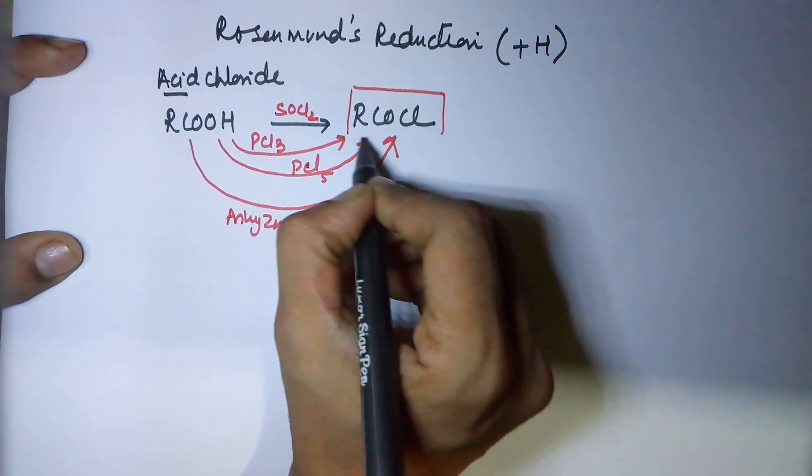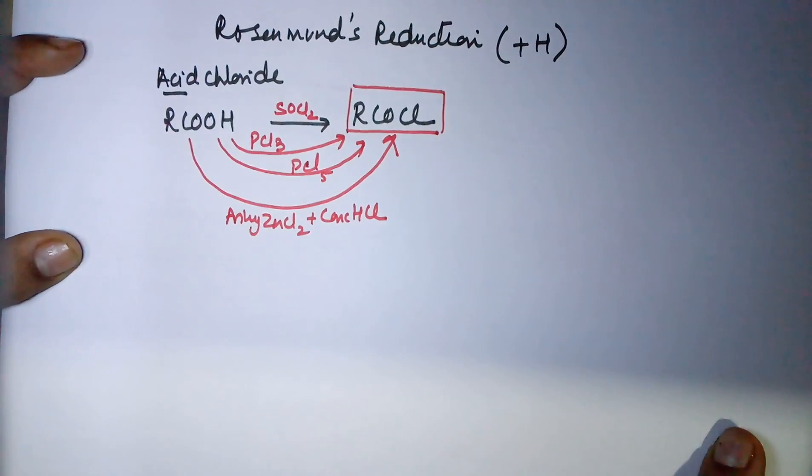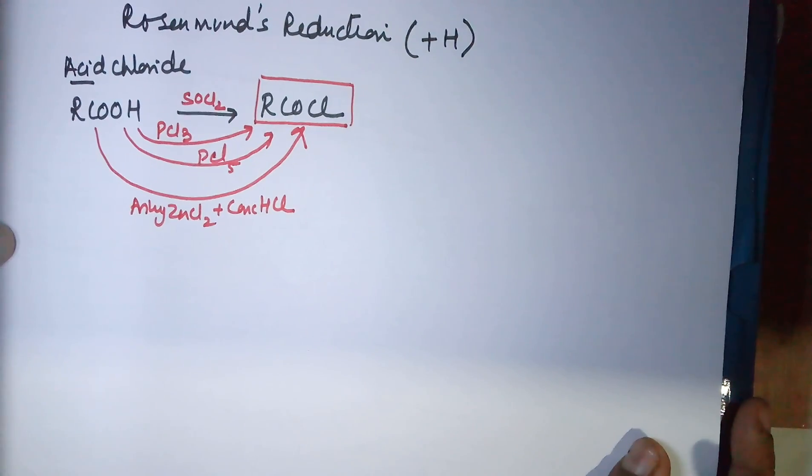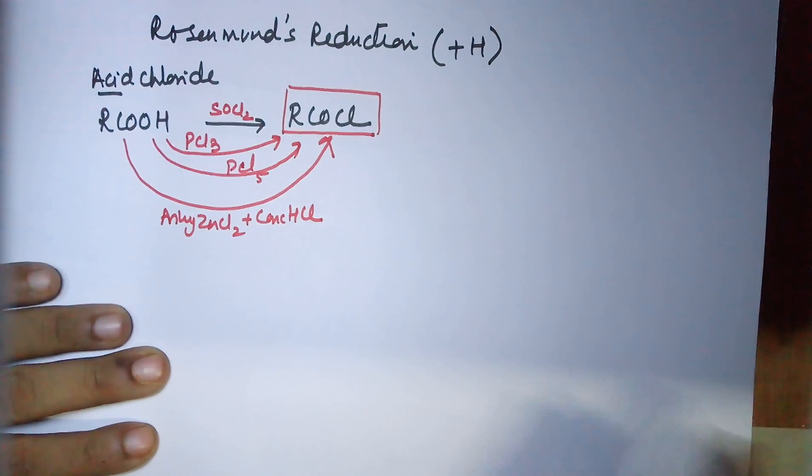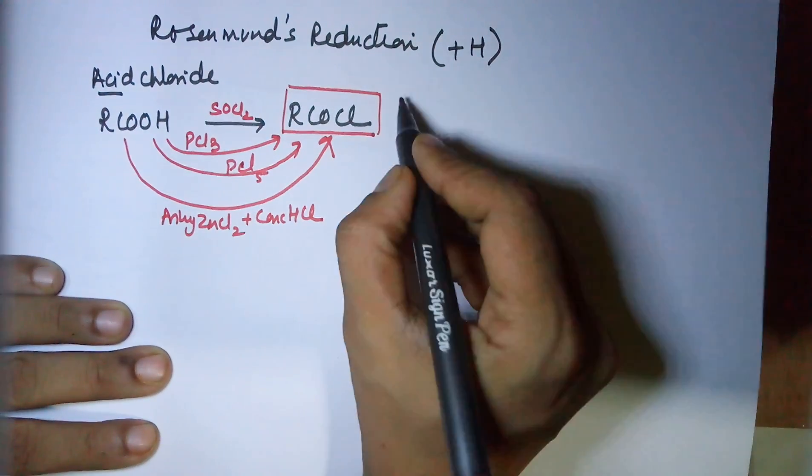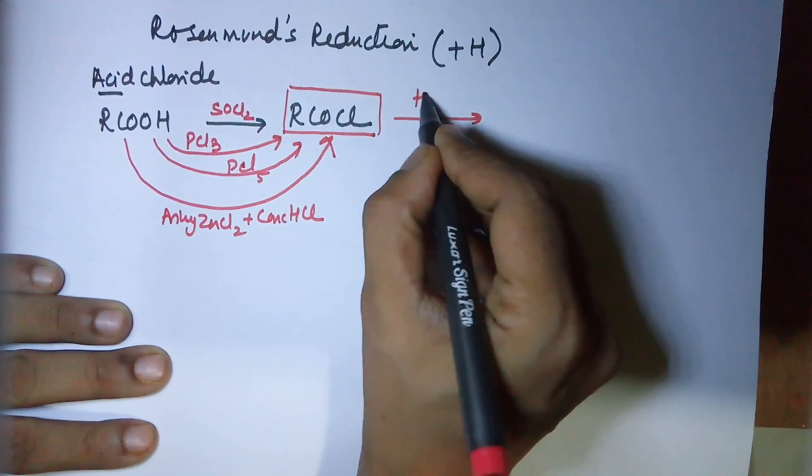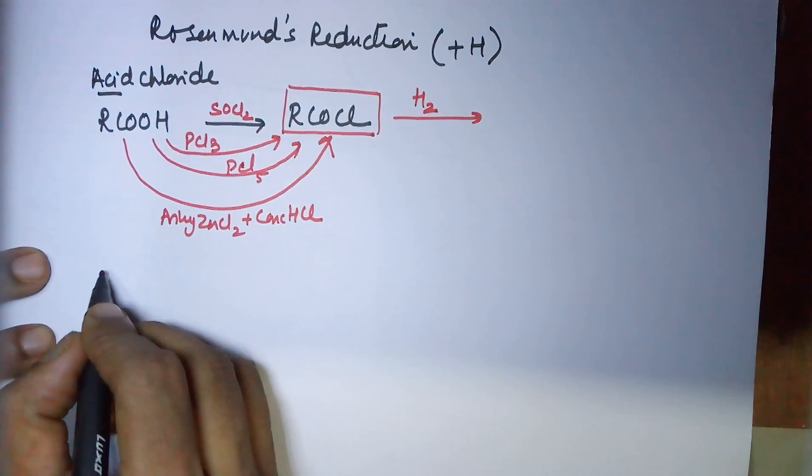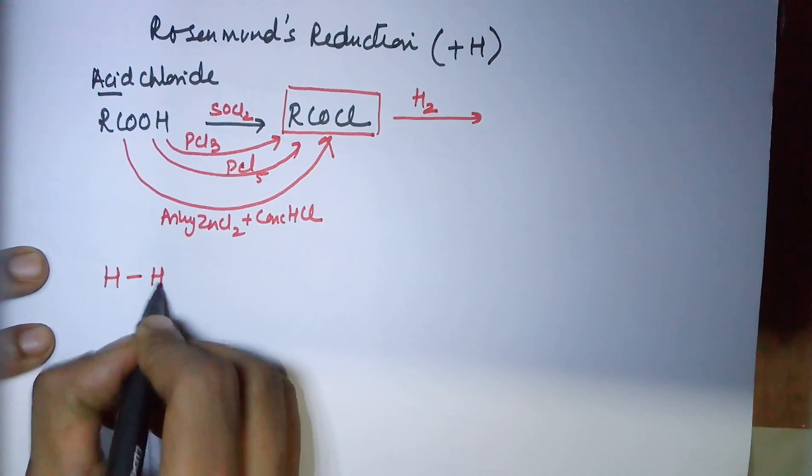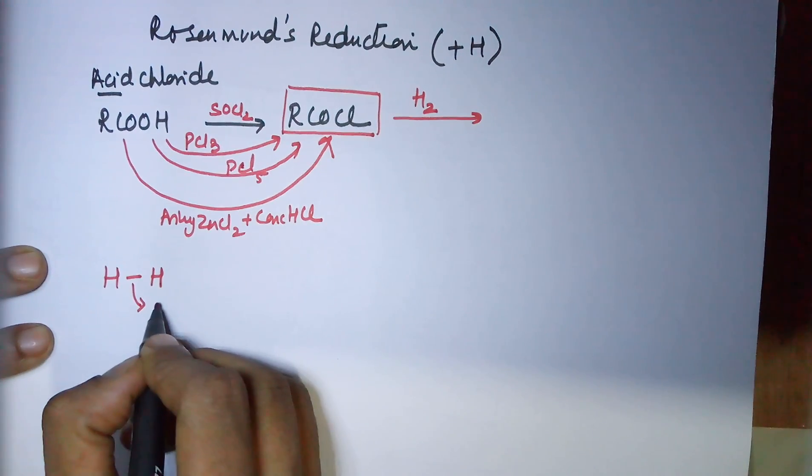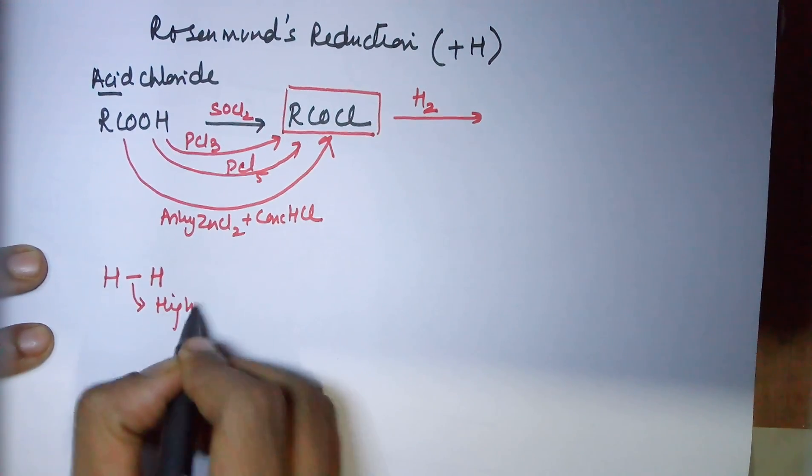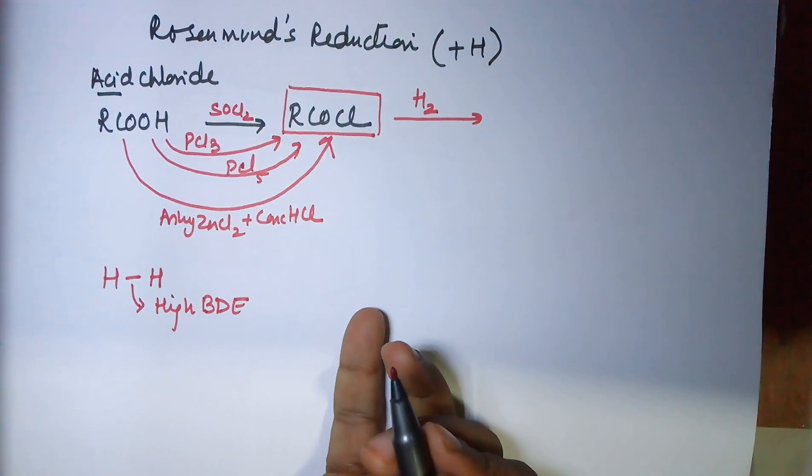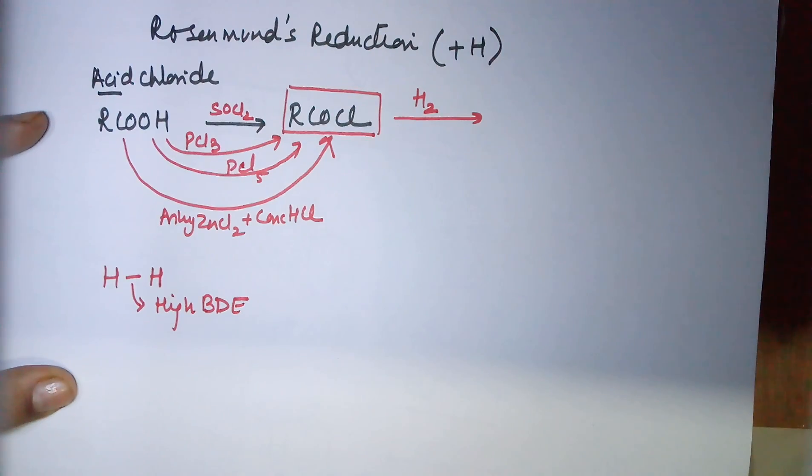The requirement in our reaction - once you have an acid chloride with you, the aim is reduction. For this reduction we use hydrogen, which is understandable. The hydrogen bond is very strong - these are two small atoms of hydrogen bonded tightly. This particular bond has got a very high bond dissociation energy.